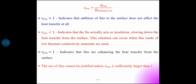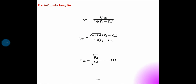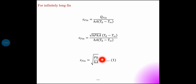The use of fins cannot be justified unless epsilon-fin is sufficiently larger than 1. For an infinitely long fin, epsilon-fin equals q-fin divided by H into A into (T0 minus T-infinity). Substituting the q-fin equation and simplifying, the result is the square root of P·k divided by H·A.